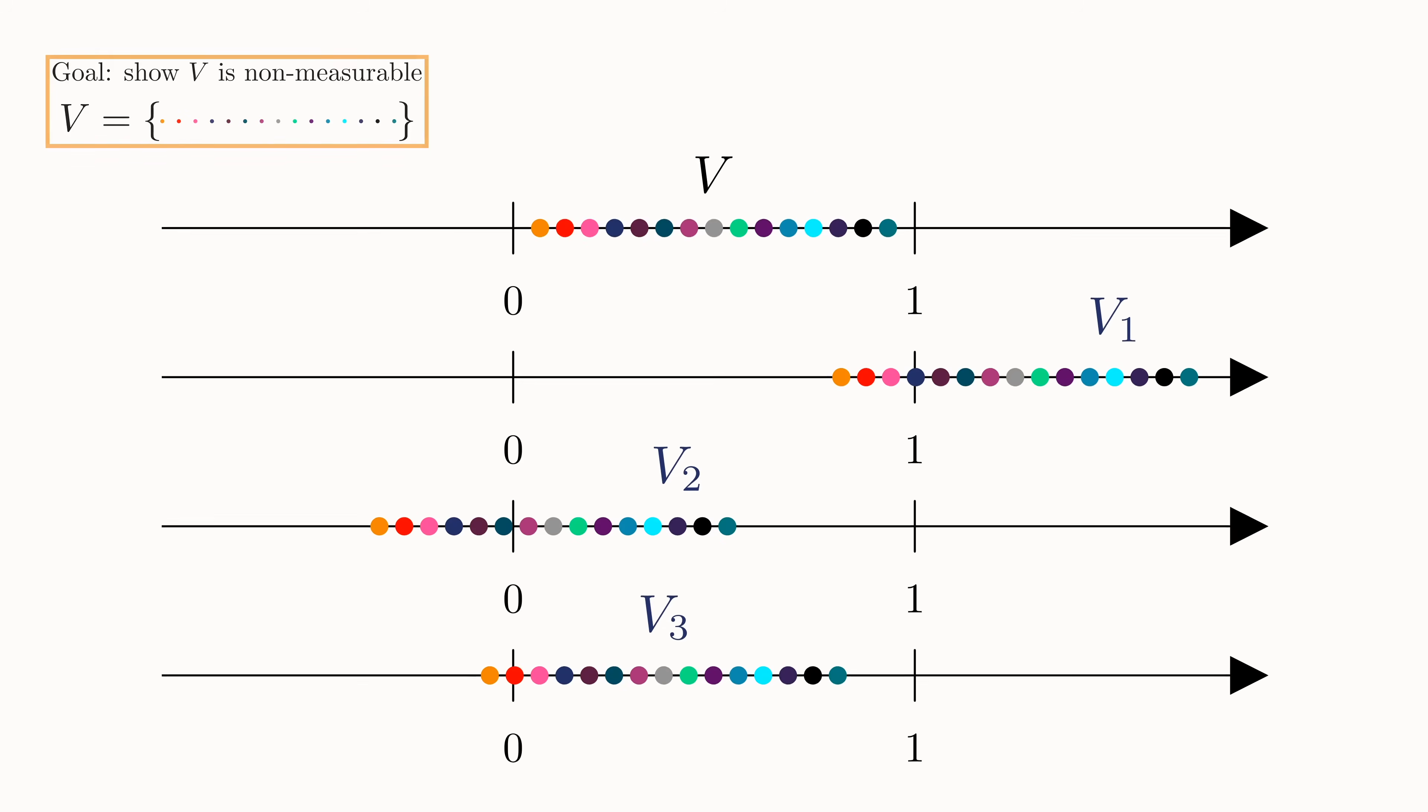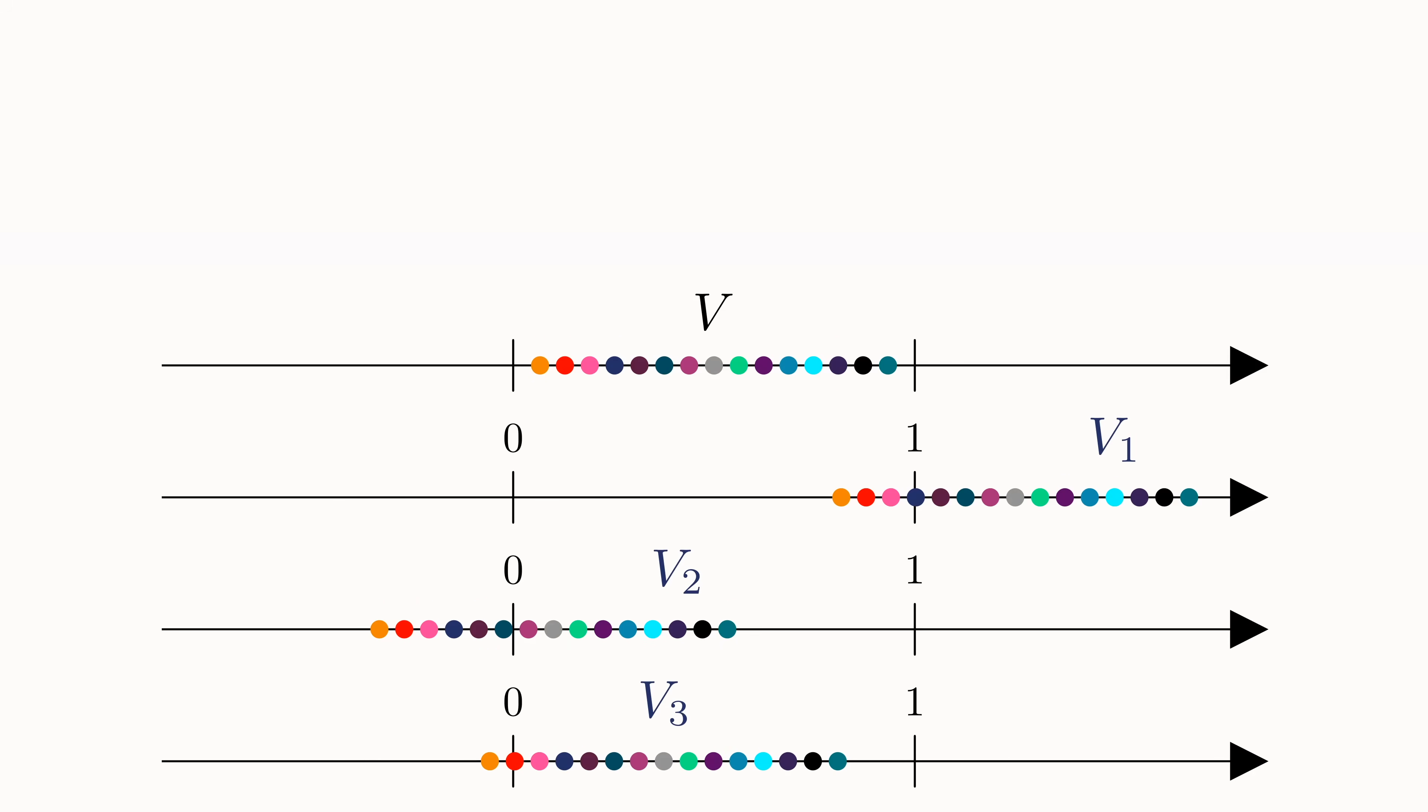Now there are two key results related to all of these sets. First, the collection of all VIs is pairwise disjoint. That is, for any two sets you pick, they will have no points in common.